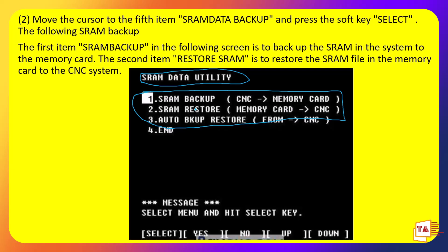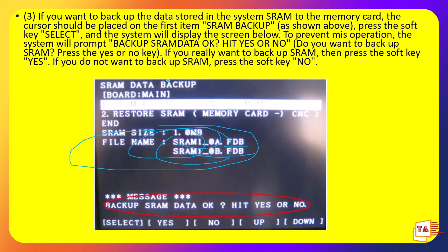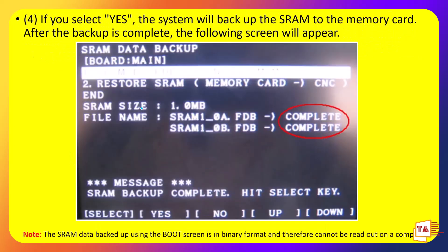Let's go to SRAM Backup. Select the menu and select Backup SRAM Data — it will ask OK, yes or no. If you click yes, it will proceed. The backup file has a specific file name: SRAM1, SRAM0A, or SRAM0B, with extension FDB. After the backup is complete, the SRAM backup complete screen will appear.